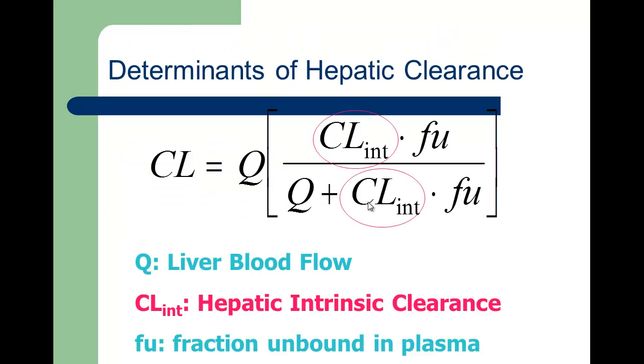The other determinants of hepatic clearance, beyond Q, include intrinsic clearance. For the liver, intrinsic clearance is really thought of as enzyme activity.